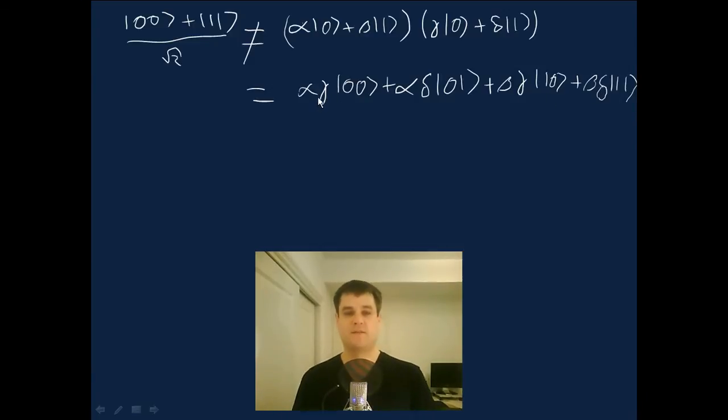And it's now pretty straightforward to see that this state can't possibly be equal to the Bell state. And the way we do it, we observe that, for example, this amplitude, αδ, must be equal to 0. That's the only way this could possibly be equal to the Bell state.